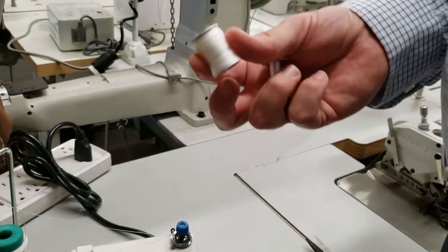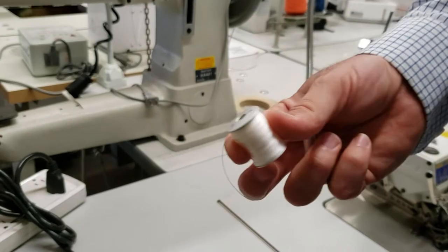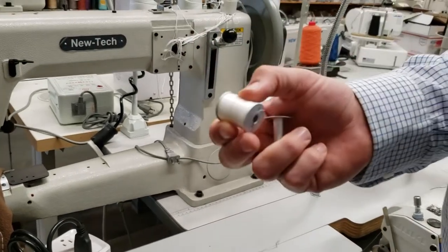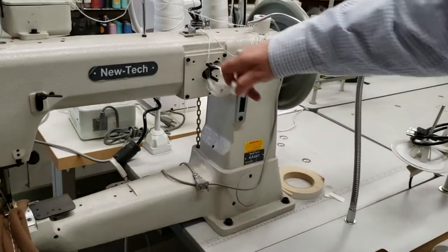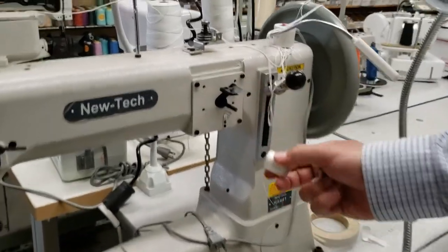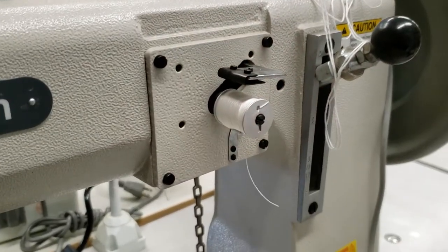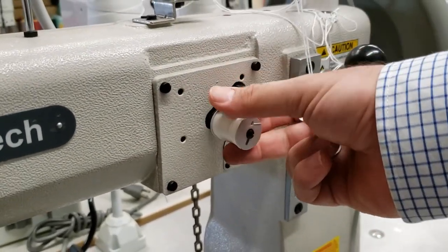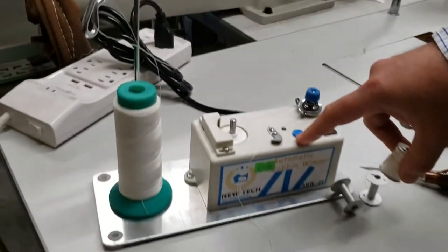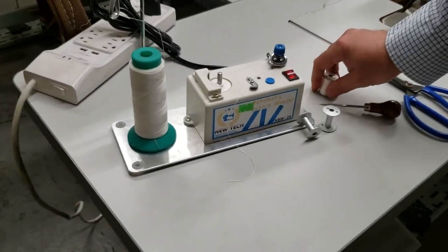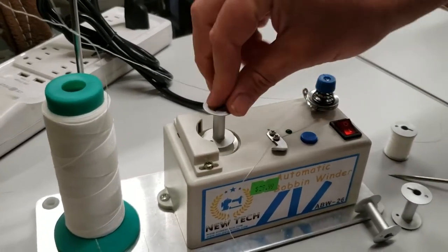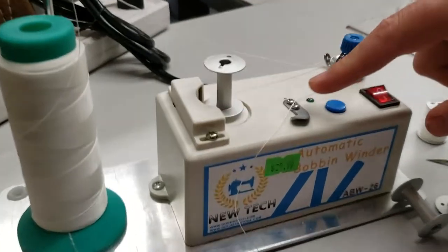It's made for Juki, Cowboy, Consew machines - they all have them. People are having a hard time rewinding them. Usually you put them in the machine and rewind them there, but some people don't want to be doing it there and they want to do it on our bobbin winder.